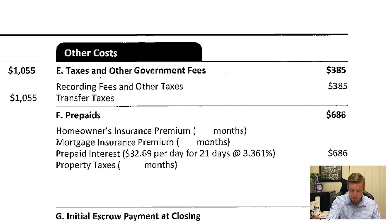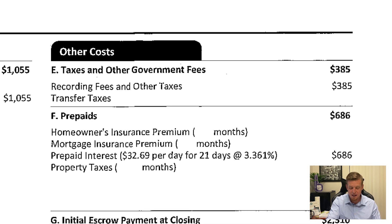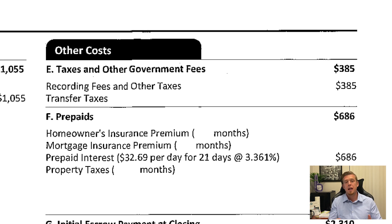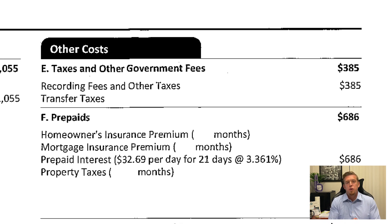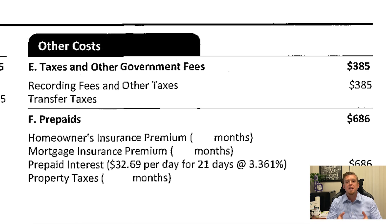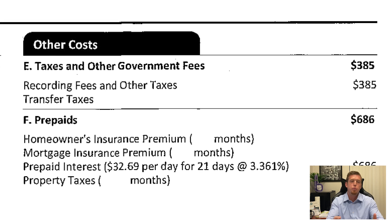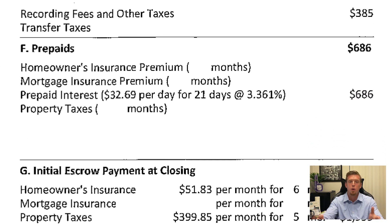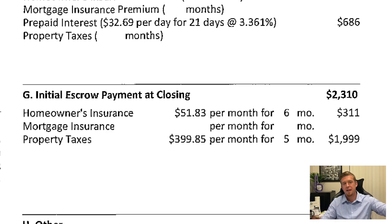Let's move over to other costs, which is on the right side of page two. You've got recording fees, prepaids, and initial payments at closing. If you don't know how escrows work with tax and insurance, please look up a video on that. But this is where you're basically funding those accounts — you're prepaying. It's your own money; the mortgage company is just holding on to it. They're going to send it to the county for taxes, send it to your insurance company for your insurance. That's what that is.